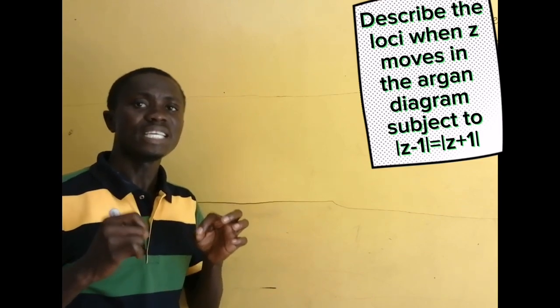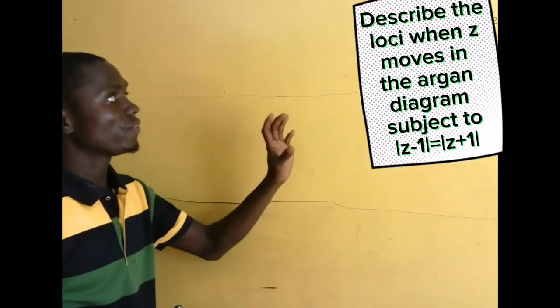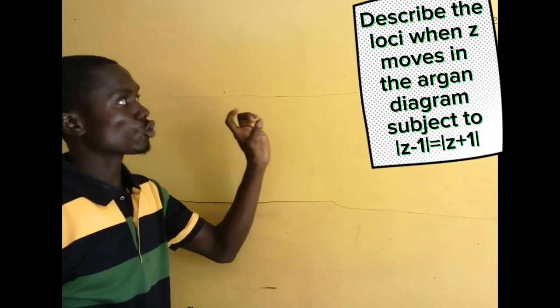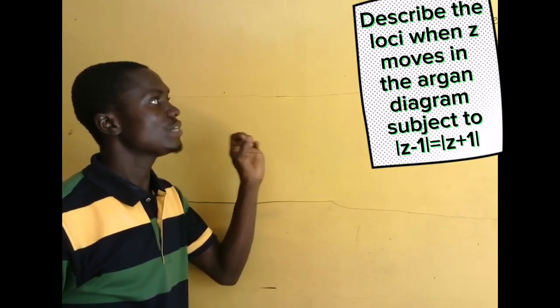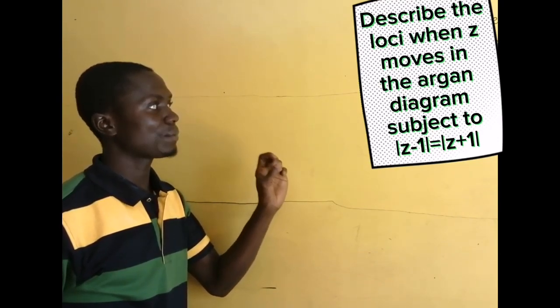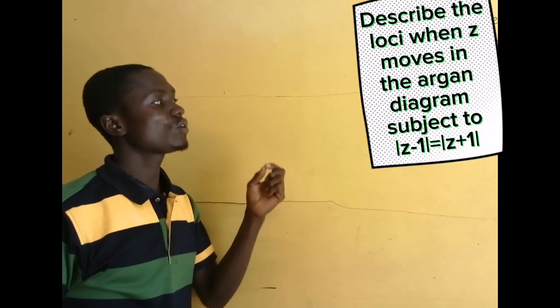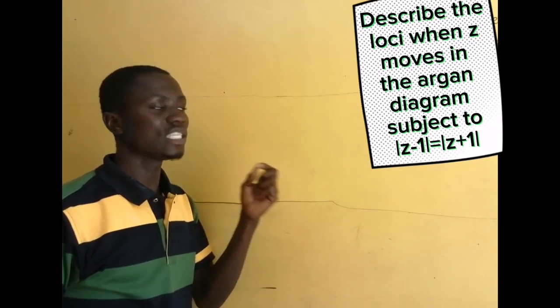In this lesson, we are going to look at loci in the Argand diagram. We will be taking this question: Describe the locus when z moves in the Argand diagram subject to |z - 1| = |z + 1|.